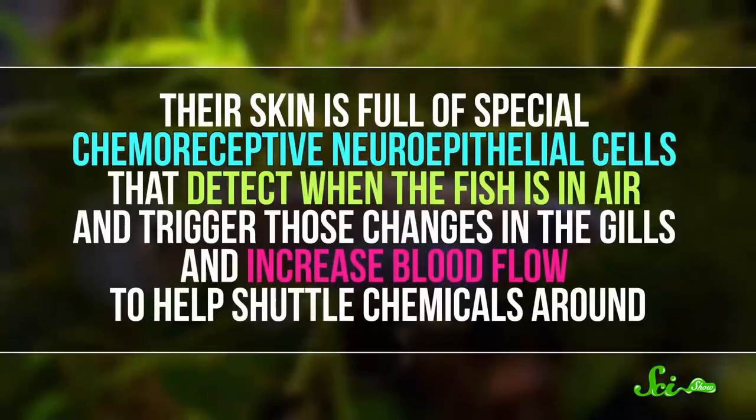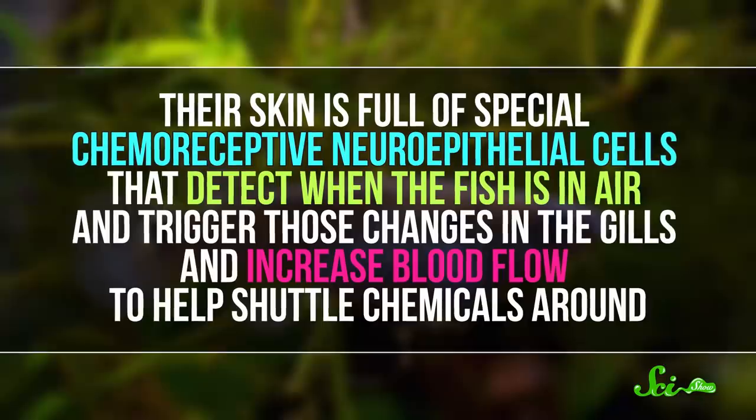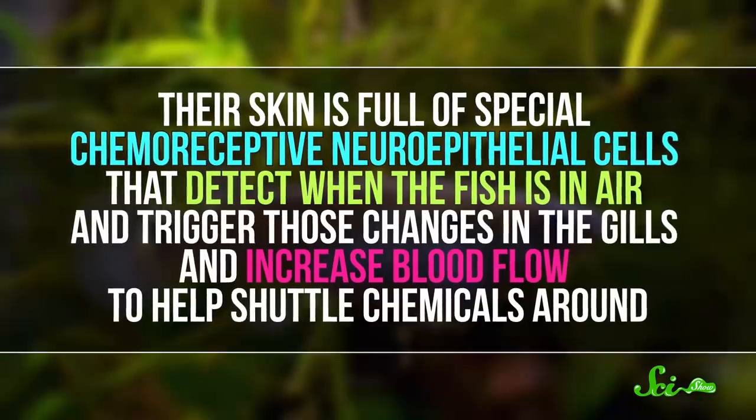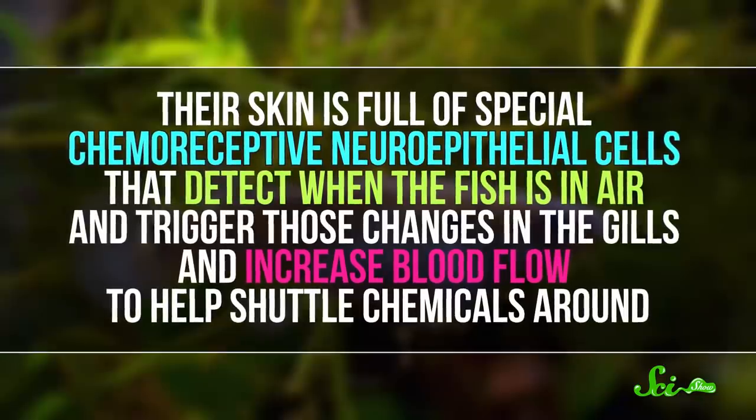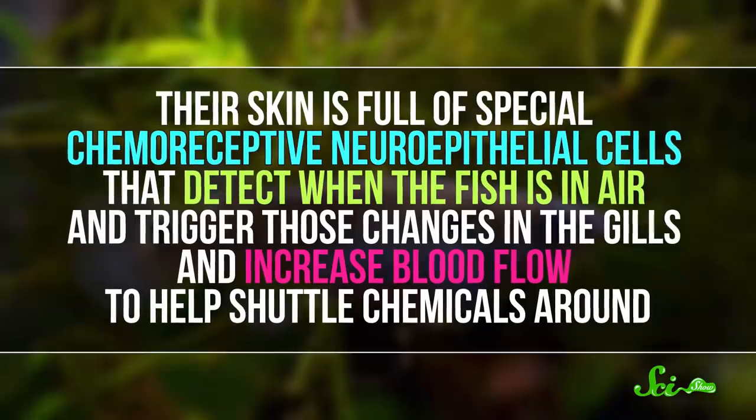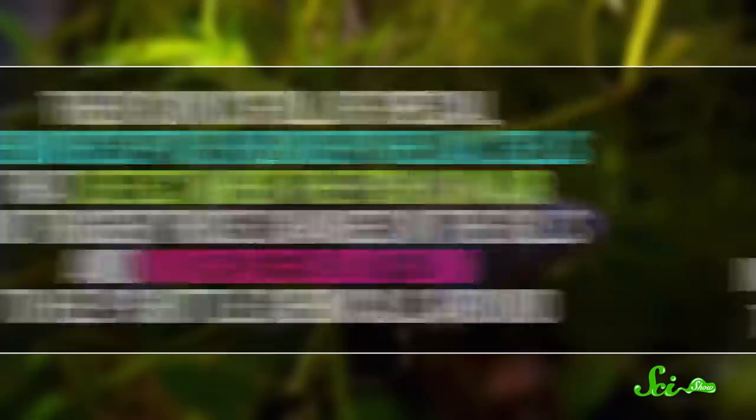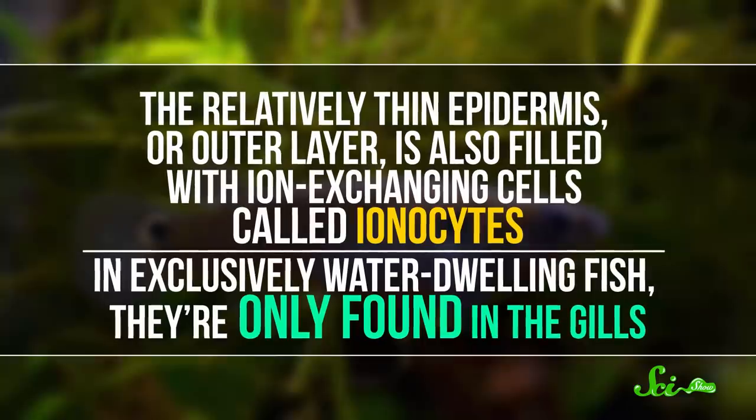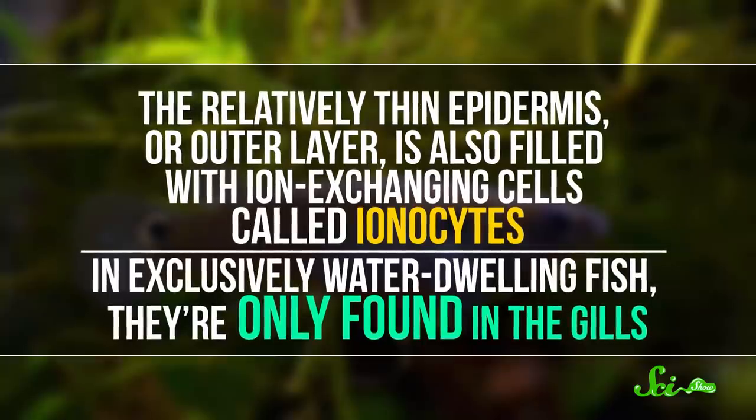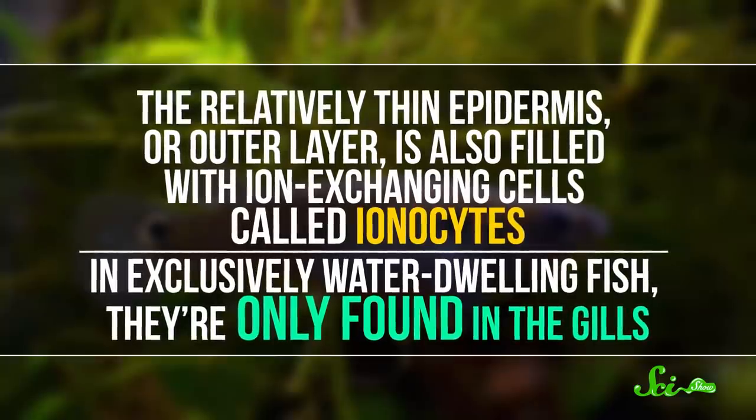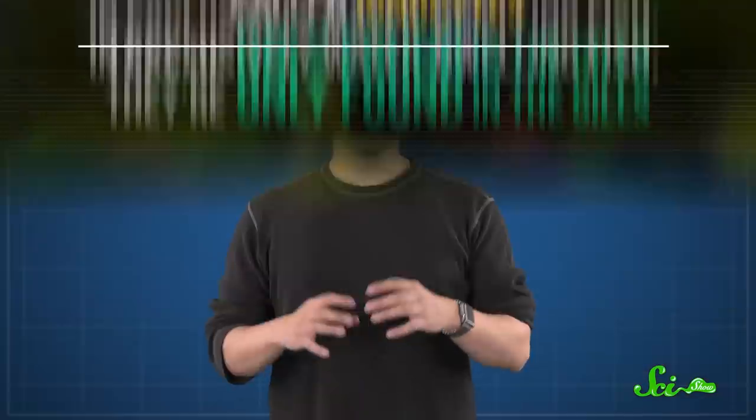Without functioning gills on land, the killifish relies on its skin for breathing. Their skin is full of special chemoreceptive neuroepithelial cells that detect when the fish is in air, and trigger those changes in the gills and increase blood flow to help shuttle chemicals around. The relatively thin epidermis, or outer layer, is also filled with ion-exchanging cells called ionocytes. In exclusively water-dwelling fish, they're only found in the gills. Ionocytes help maintain the levels of ions in blood, so that a fish's cells can function properly.